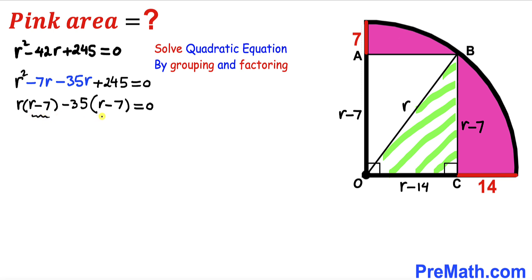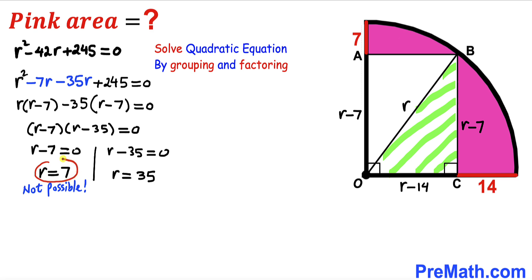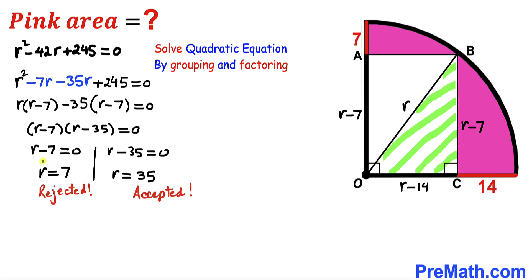Factoring out r gives (r − 7), and factoring out −35 also gives (r − 7). Putting it together, we get (r − 7)(r − 35) = 0. Separating the factors: r − 7 = 0 gives r = 7, and r − 35 = 0 gives r = 35. Now, r = 7 is not feasible — substituting it would make the side length r − 14 = 7 − 14 = −7, which is a negative length and must be rejected. Therefore we accept r = 35.